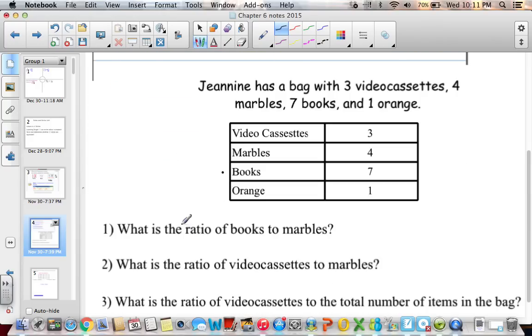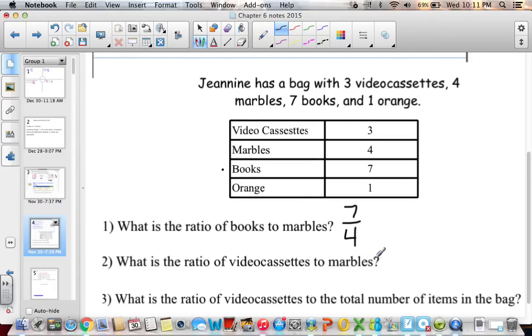So Janine has a bag with 3 video cassettes, 4 marbles, 7 books, and 1 orange. What is the ratio of books to marbles? So books is going to be my numerator, marbles is going to be my denominator. Because it's an improper fraction, I just leave it like this and it can't be simplified. The ratio of video cassettes to marbles. Video cassettes is first on the top as my numerator, marbles are my denominator. 3 fourths, and I cannot simplify that, so then I'm done.